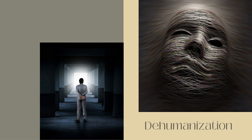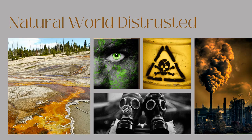Another thing you will see in dystopia is that the natural world is distrusted. Often this is because there's been some kind of a tragedy — an ecological disaster — or in fantasy novels because magic went wrong, or magic was broken, or magic broke some kind of spell and created major problems for that world.